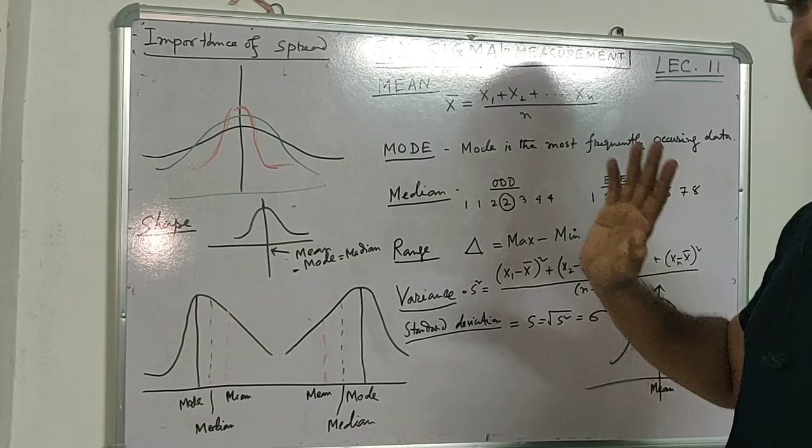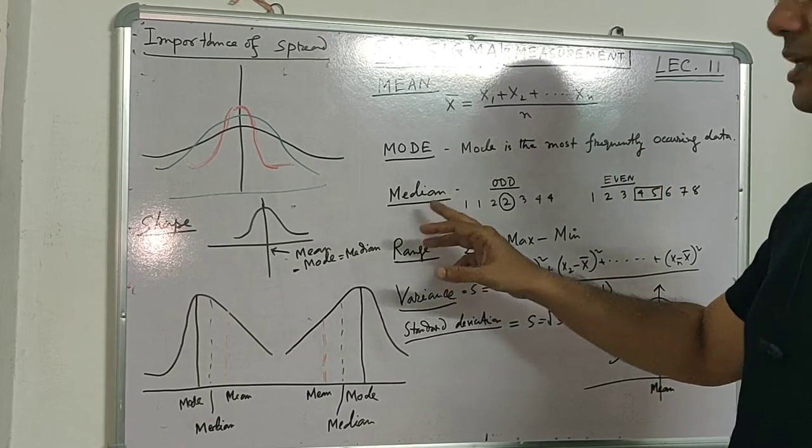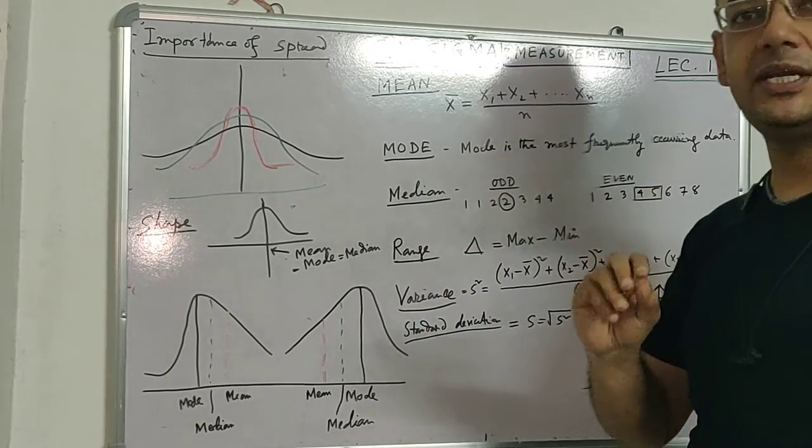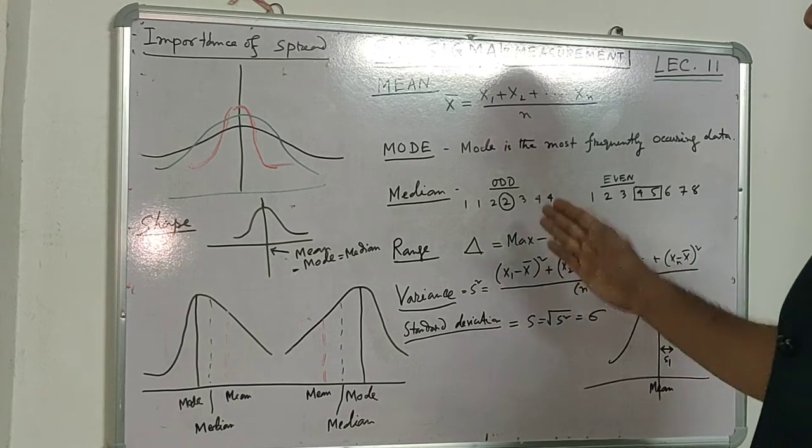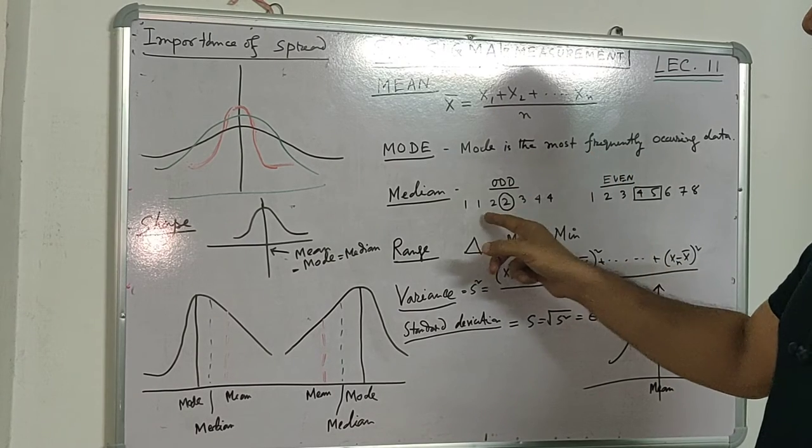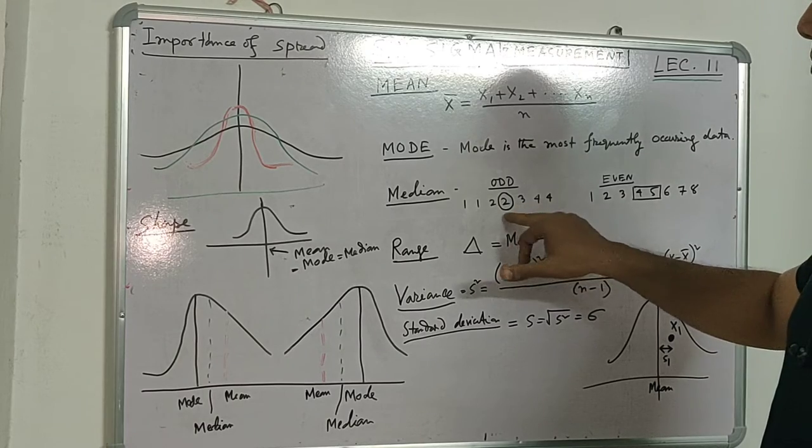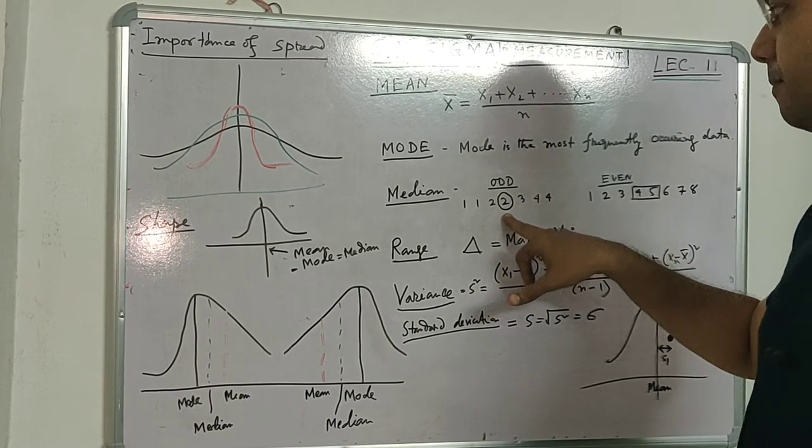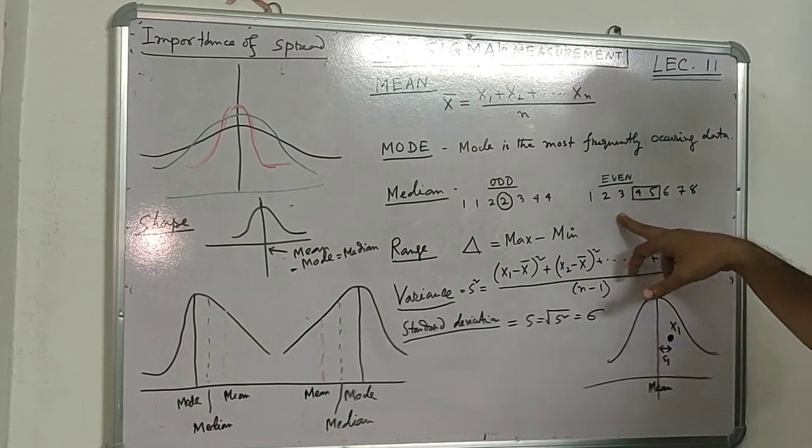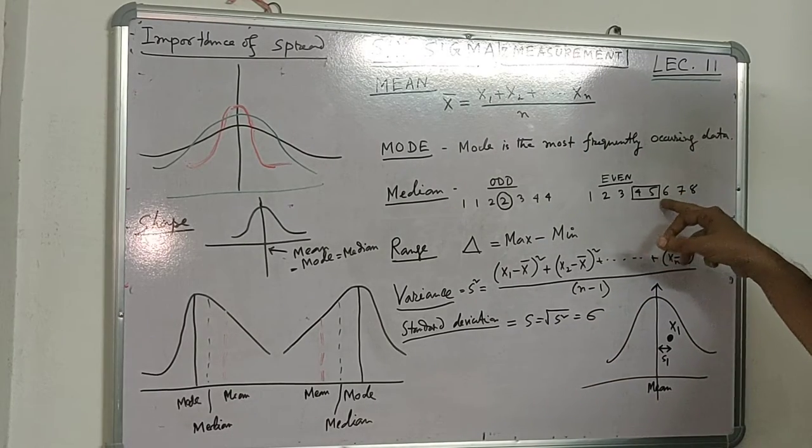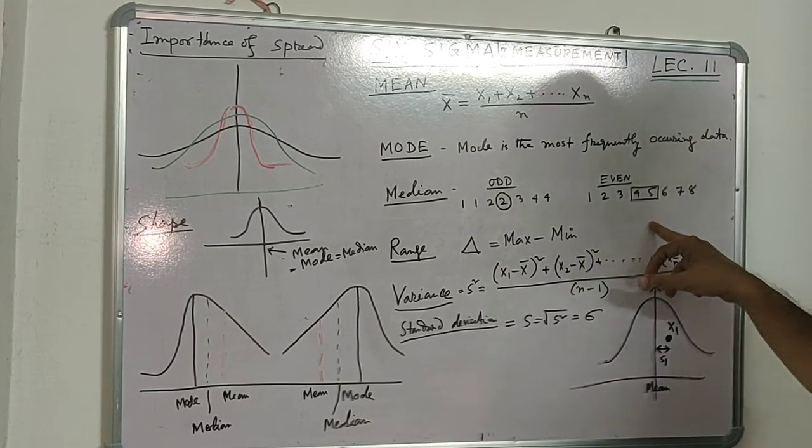Mode is where maximum data points are clustered. Then the other one is median—the middle number. In the case of an odd series like 1, 1, 2, 2, 3, 4, 4, the middle number is 2—this is the median. In the case of even data, there are two middle points because either side will have the same range of data.